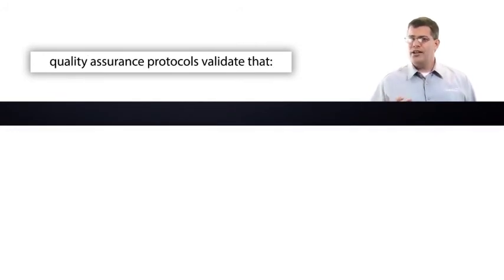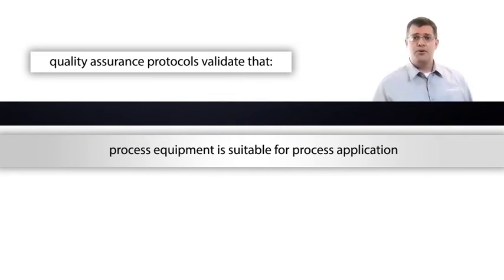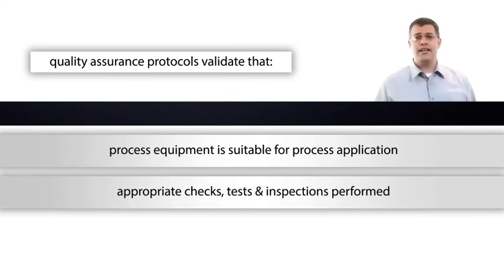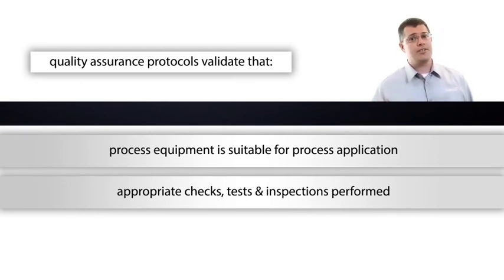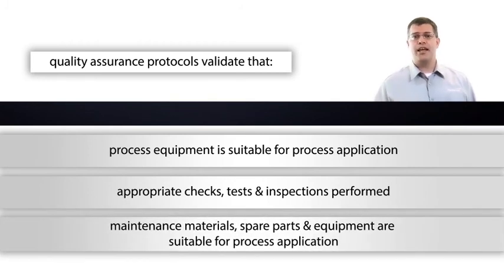The quality assurance protocols validate that the process equipment is suitable for the process application for which it will be used, that the appropriate checks, tests, and inspections are performed to verify that the process equipment is installed properly and consistent with design specifications and the manufacturer's instructions, and that maintenance materials, spare parts, and equipment are suitable for the process application for which they will be used.